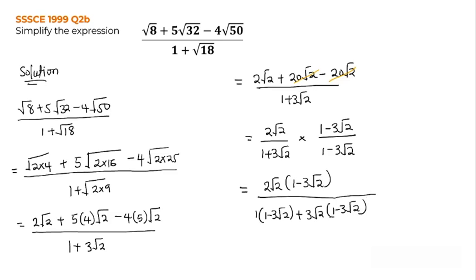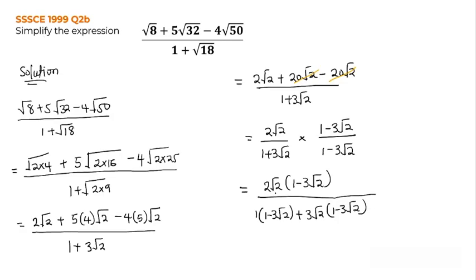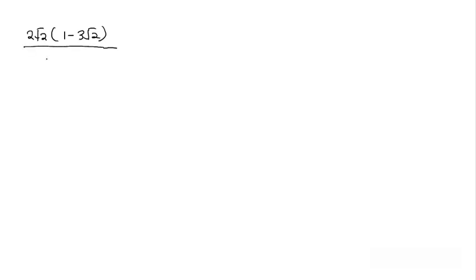So this is equal to — I'll be doing that on the next slide. The expression I have is 2 root 2 multiplied by 1 minus 3 root 2, all over 1 times bracket 1 minus 3 root 2 plus 3 root 2 times bracket 1 minus 3 root 2.